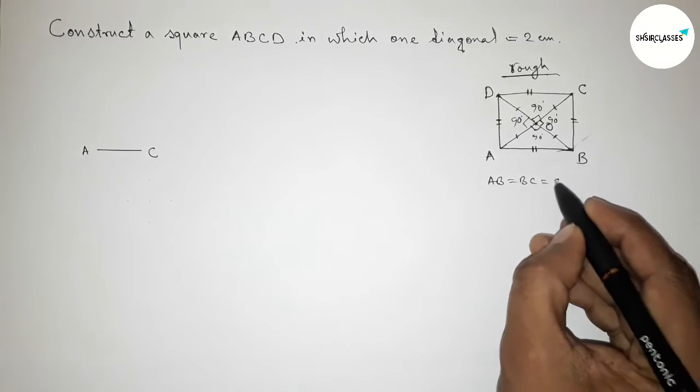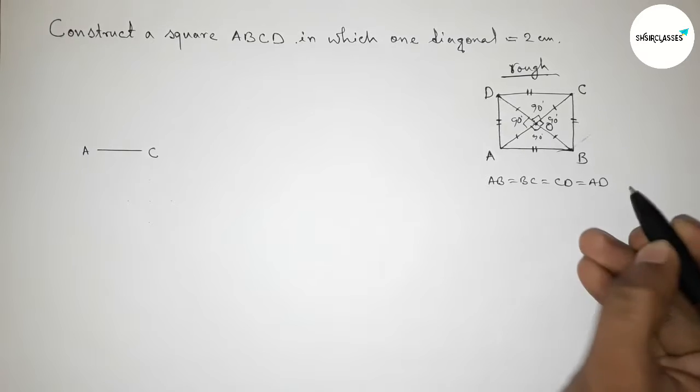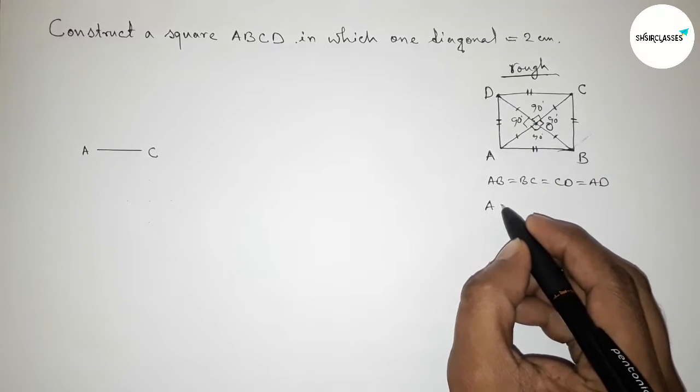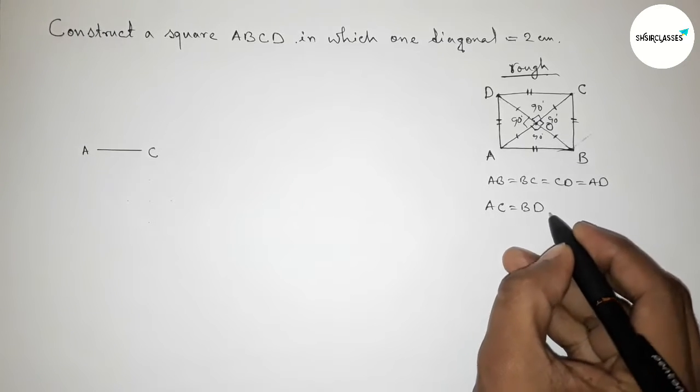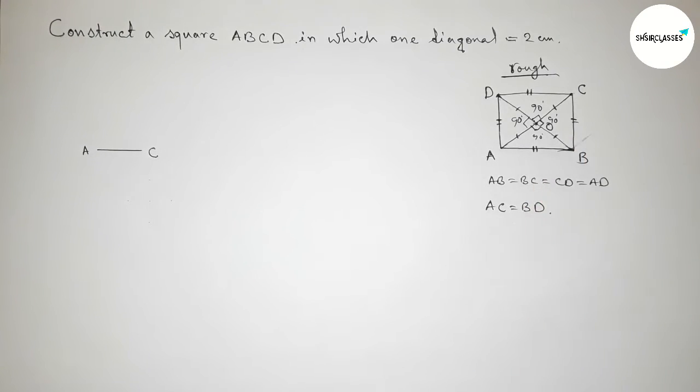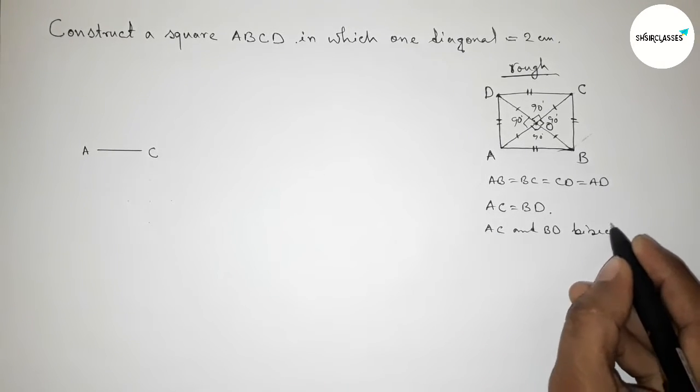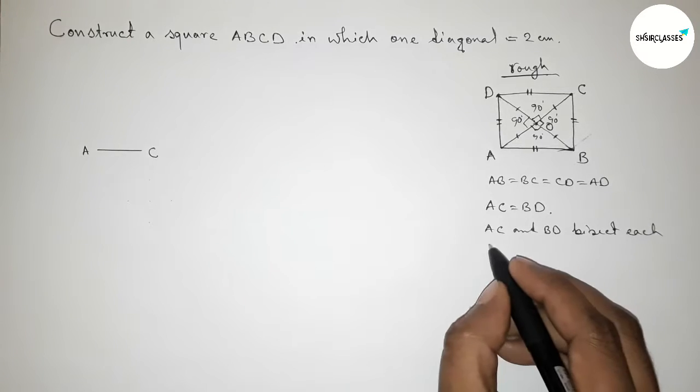So taking here intersecting point O. So OA, OC equal, similarly OD and OB equal. So now first write down here, so all the side equal. Next also we can say that the two diagonals equal.